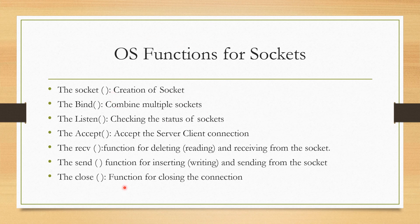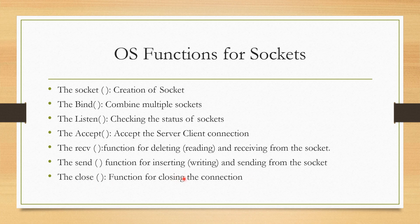These are the operating system functions provided for the functioning of sockets. For creation of a socket, we have the socket function. For combining multiple sockets, we have the bind function. Listen means checking the status of the socket — whether it is receiving or sending data. For accepting or making the client-server connection, we have the accept function. The receive function is for receiving data from the socket, that is, a reading function. Send means writing or sending data from the socket. And the close function is for closing the connection of the socket. In this section, we discussed about sockets — the concept, the four different types, and the operating system functions. In the next section, we will be seeing another type of inter-process communication, that is, Remote Procedure Call.